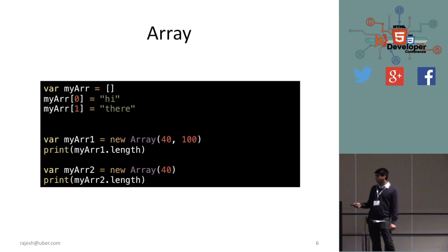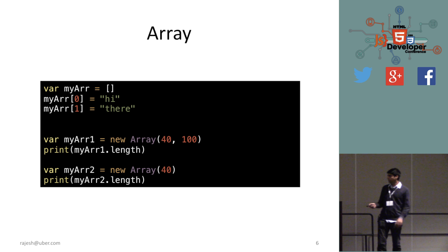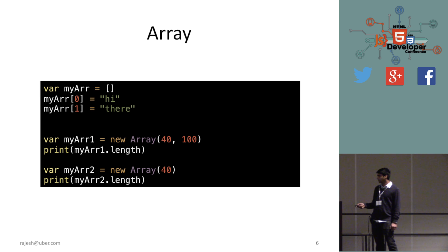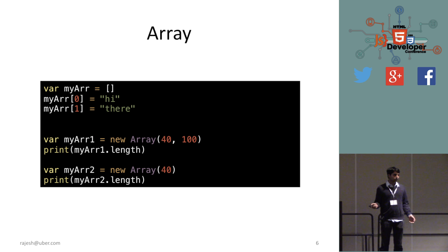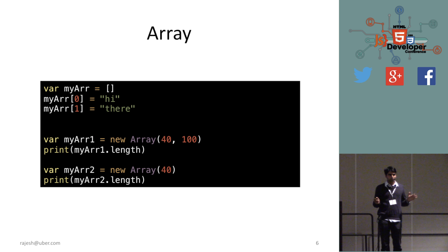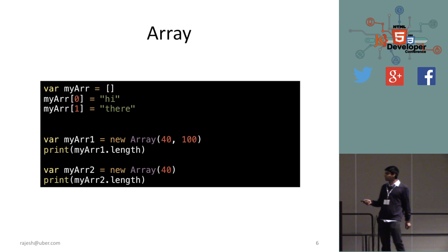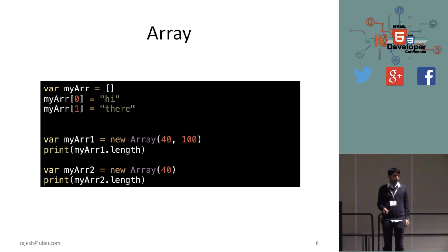When you print new Array(40, 100), it will print two elements: 40 and 100. But when you say new Array(40) with a single argument, it will print 40 — meaning an array of length 40. That's a little counter-intuitive, which is why I prefer the bracket syntax for initializing arrays.